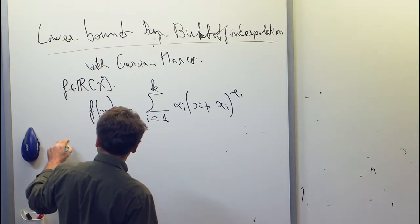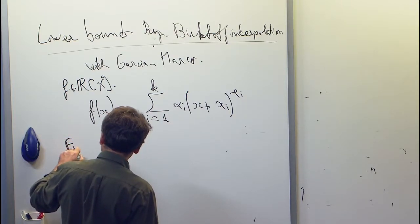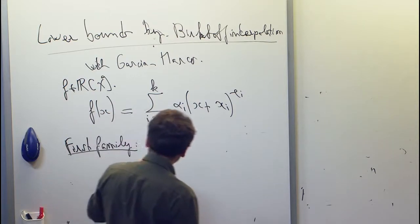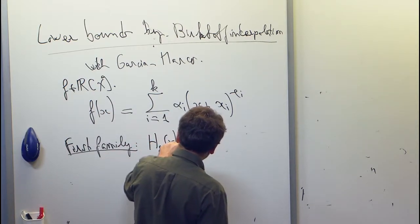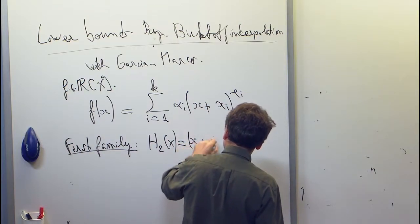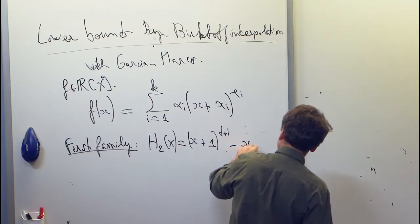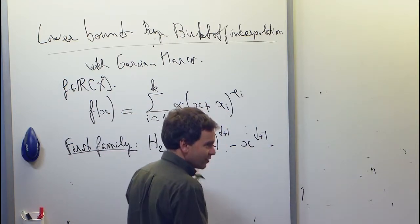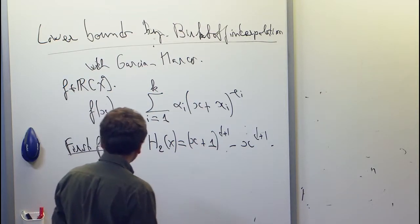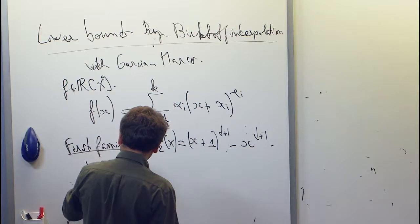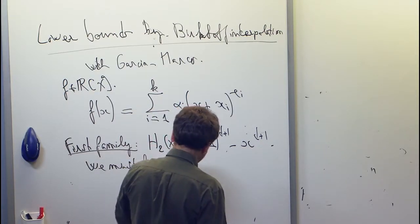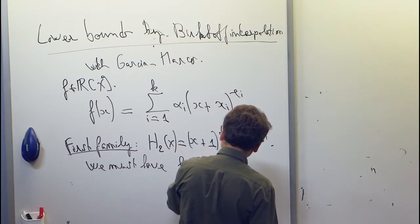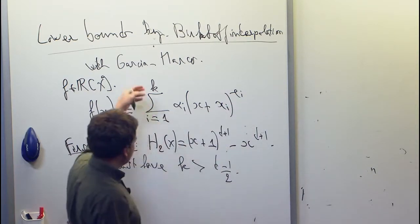And we have a couple of examples. So here's one family of examples. This polynomial here, which we call h2 for some reason, is x plus 1 to the power d plus 1 minus x to the d plus 1. So it has degree d and it requires a linear number of terms. And we have a fairly precise bound. We must have at least d minus 1 over 2 terms.